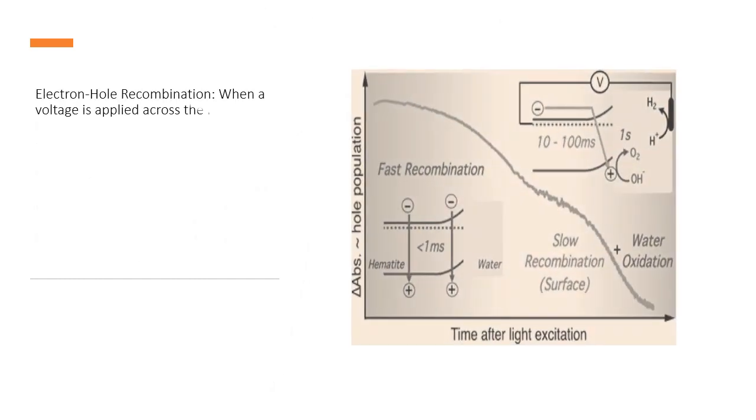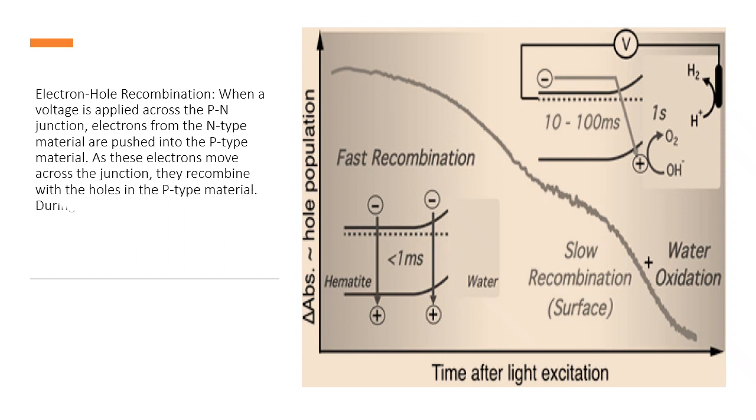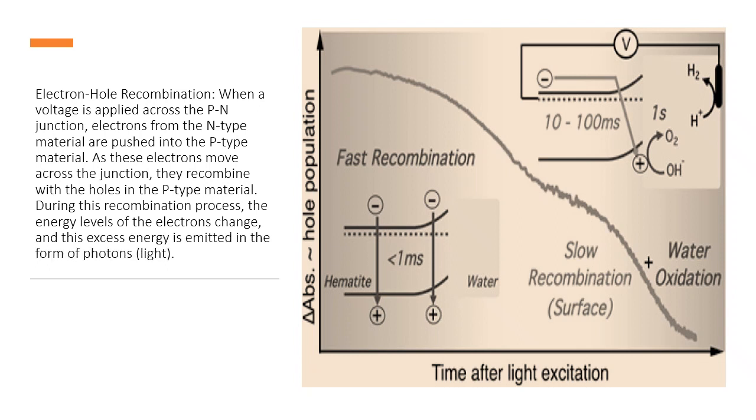Electron-hole recombination: When a voltage is applied across the P-N junction, electrons from the N-type material are pushed into the P-type material. As these electrons move across the junction, they recombine with the holes in the P-type material. During this recombination process, the energy levels of the electrons change, and this excess energy is emitted in the form of photons—light.